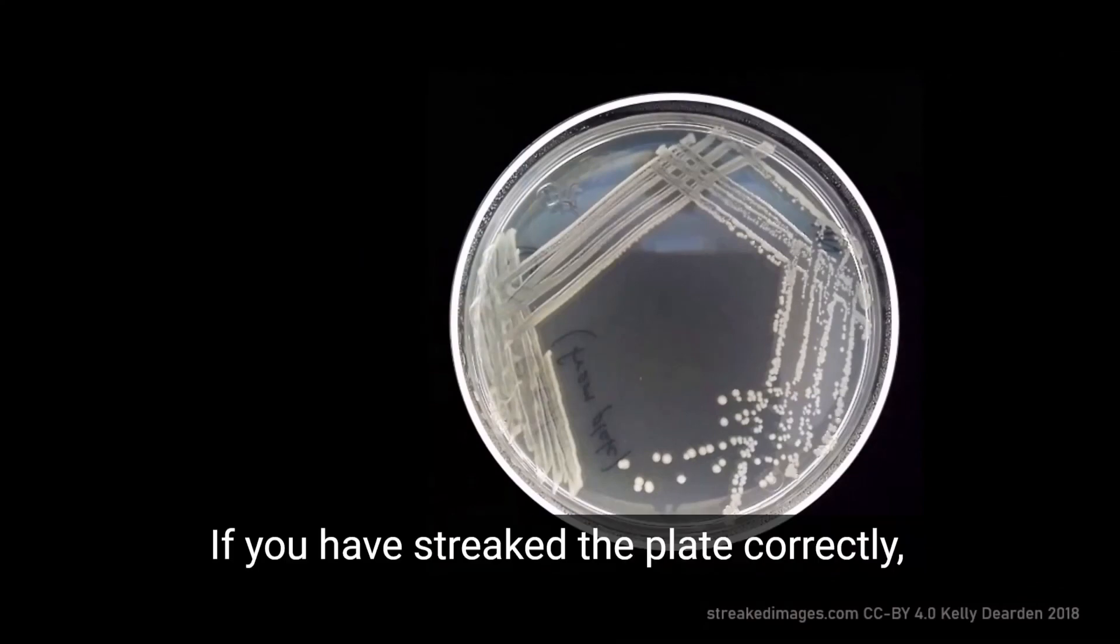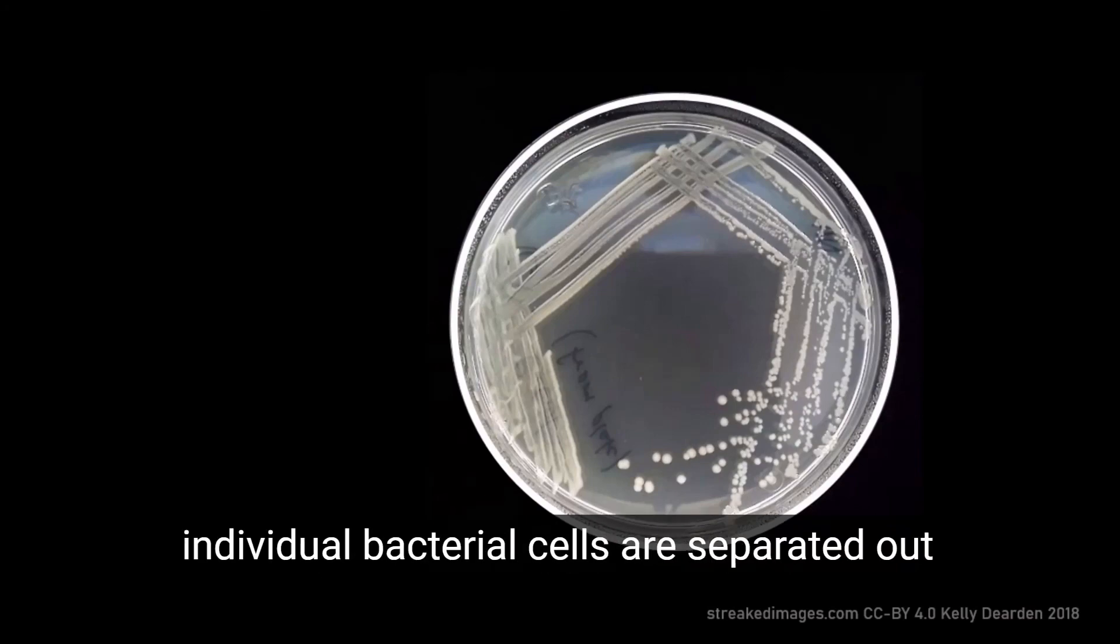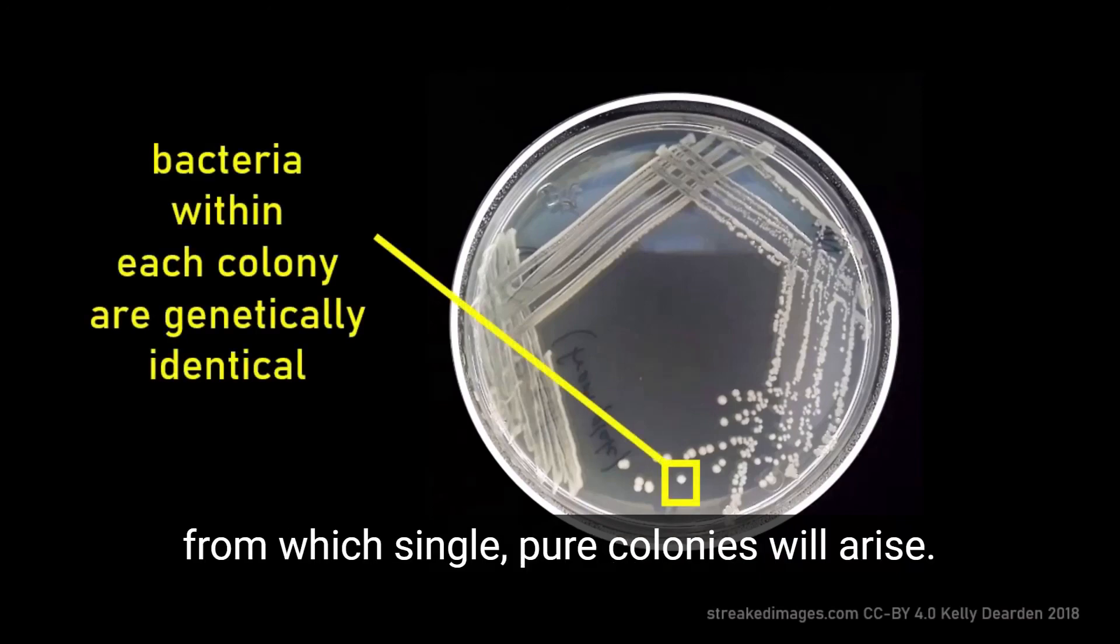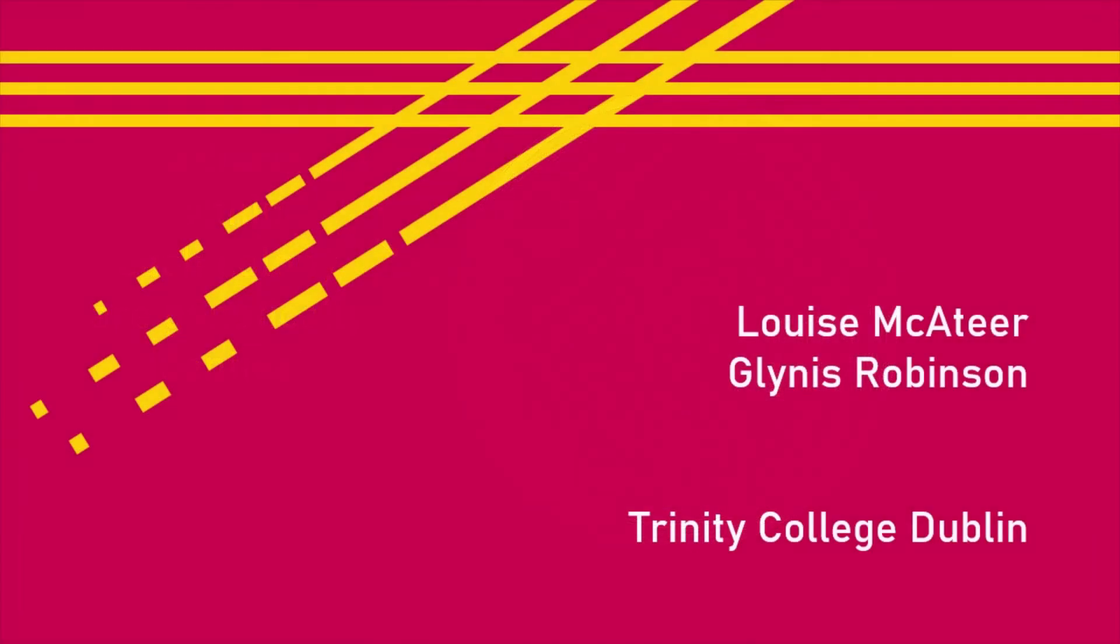If you have streaked the plate correctly, each successive streaking step dilutes bacteria further until, at the final step, individual bacterial cells are separated out on the agar from which single, pure colonies will arise.